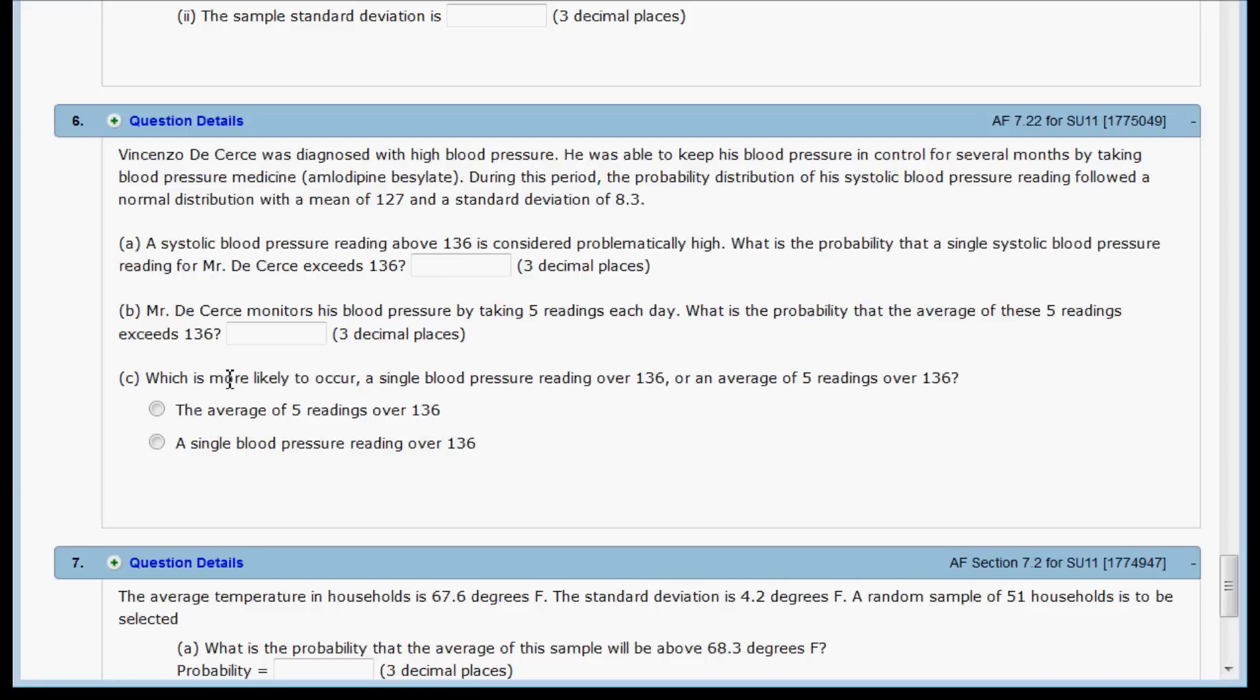Question C, which is more likely to occur, a single blood pressure reading over 136, or an average of 5 readings over 136? You can use your answers from A and B to answer this question, but you don't need to know these answers.